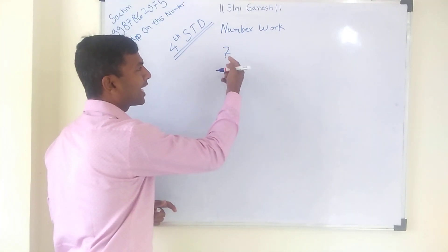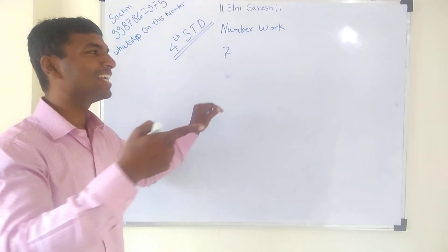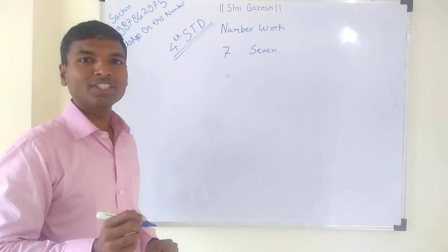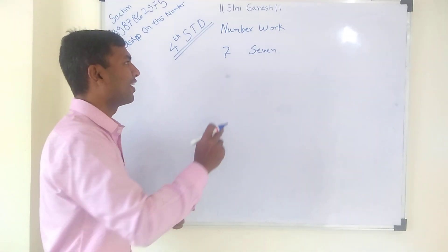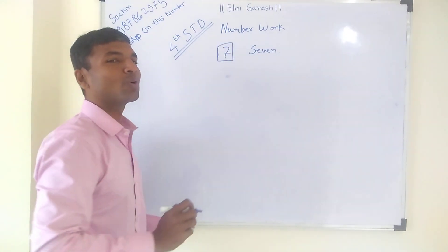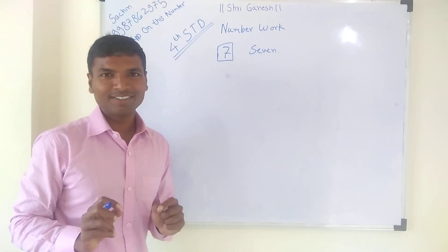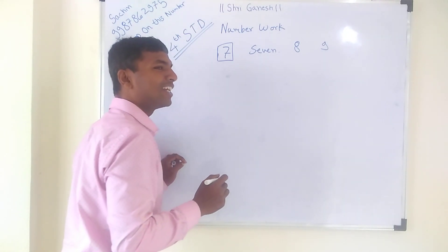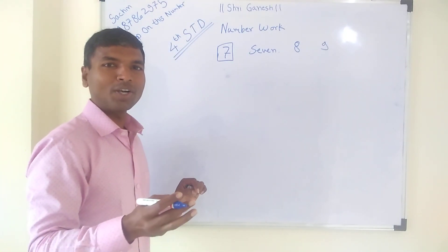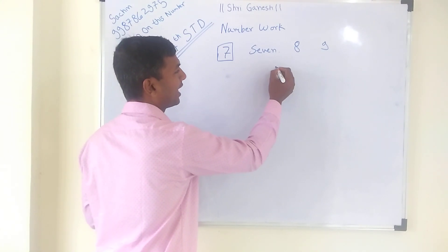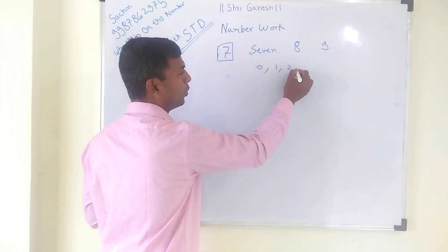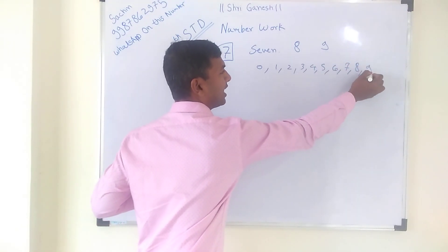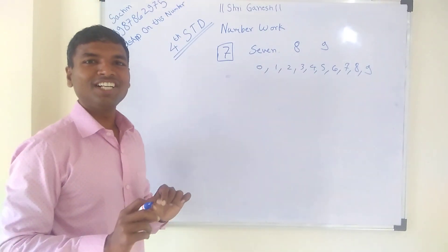Can anyone answer what is this? Yes, correctly. This is 7. So this is a single digit number. When there is only one number, it is called a single digit number. So this is 7. Like that, you can read 8, 9. So how many single digit numbers are available? 0 to 9 — so there are 10 single digit numbers.